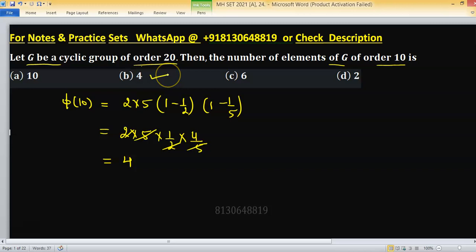Option B will be the right one. But how did we compute this, or why are we finding the value of phi(10)?